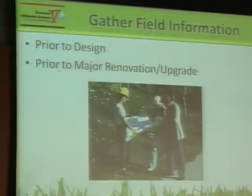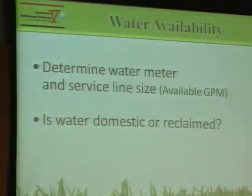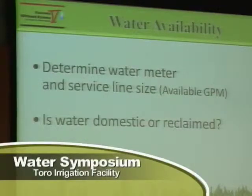I'm going to talk about all the components within an irrigation system. Efficient irrigation starts with all of us — we all have to participate in it. The elements that make up an irrigation system are design, installation, product, maintenance, and management. In order to do a design, we have to gather information about the project. We need to determine the water meters and the service line size and how much water is available to us. Is the water domestic or reclaimed?